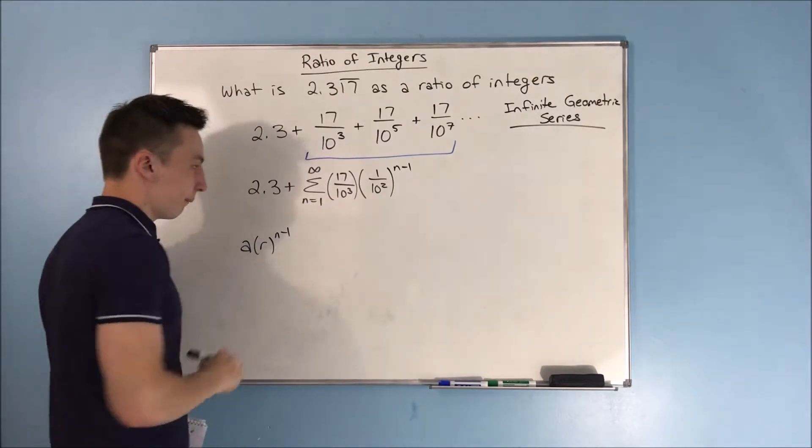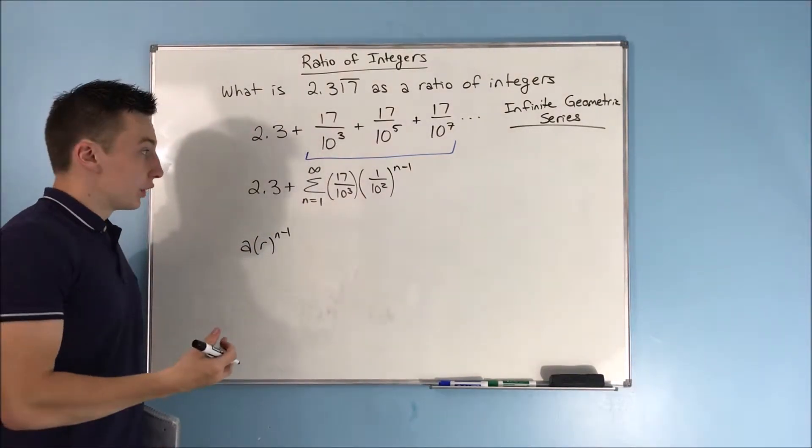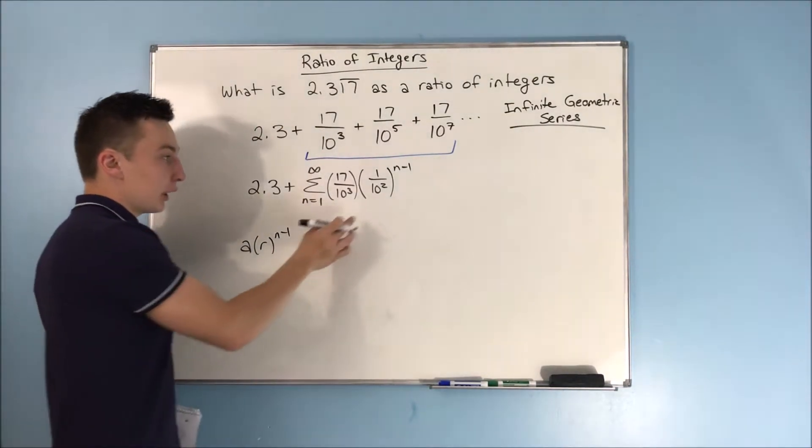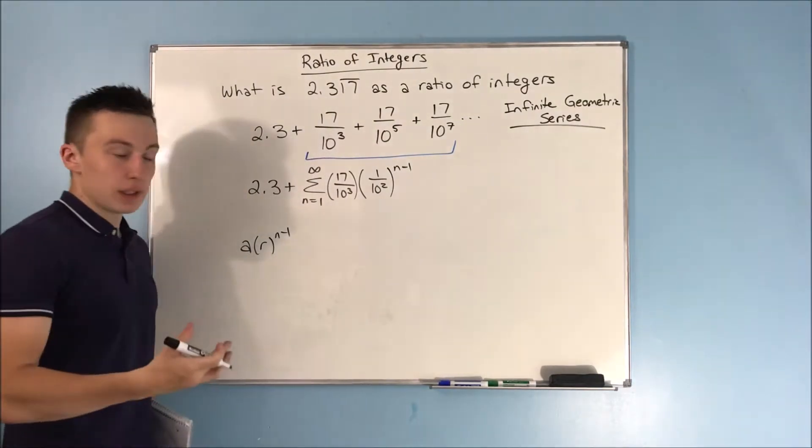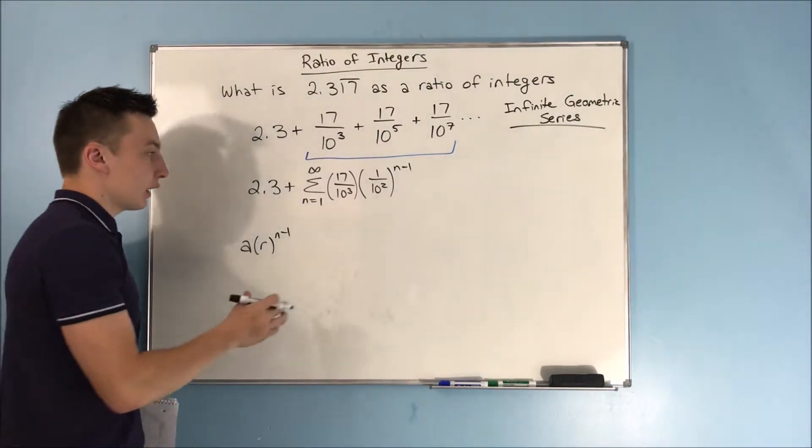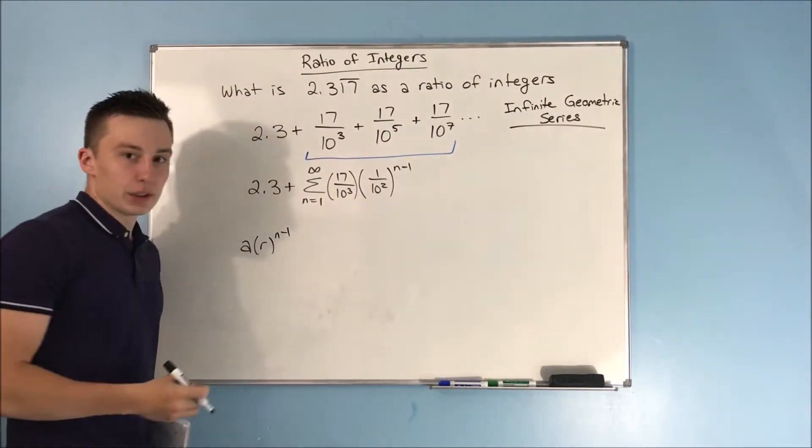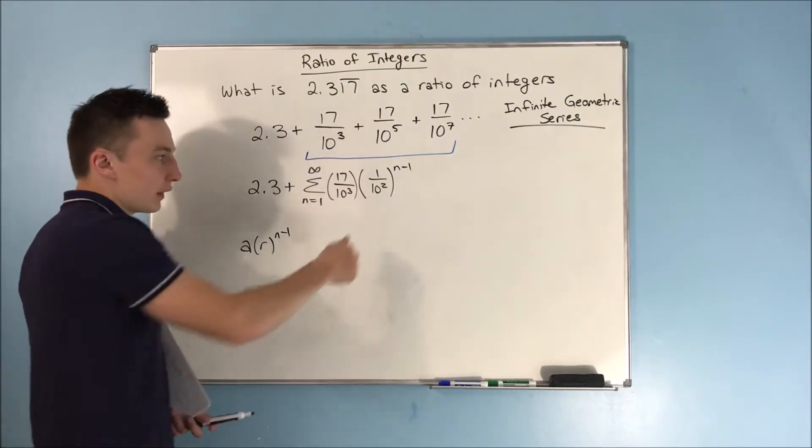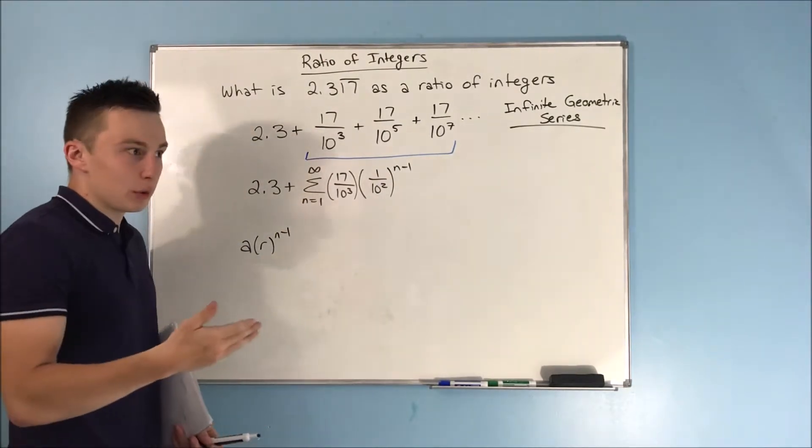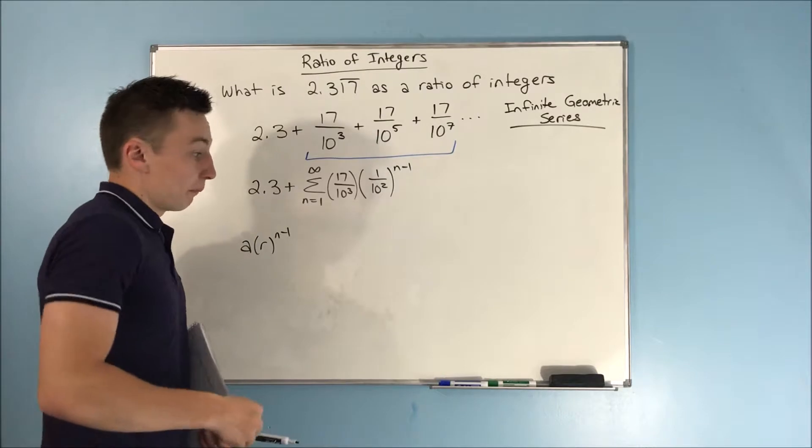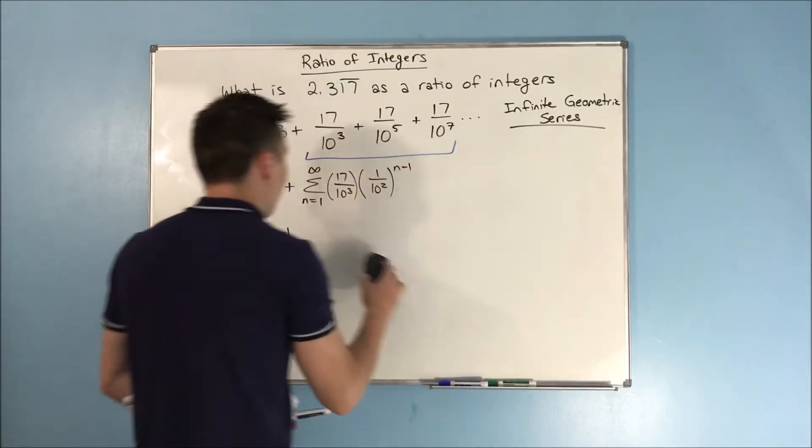So we can actually just find the sum of this. We can find the sum because this is convergent. This number is very small, it's between negative 1 and 1, so this is something that we can easily do.